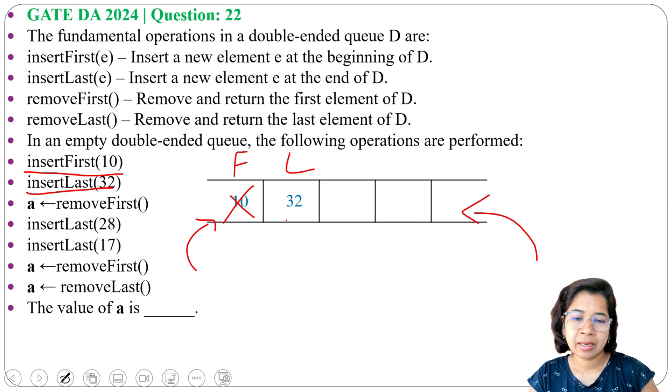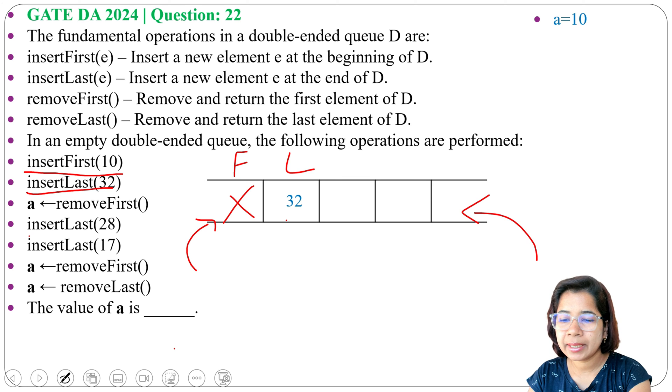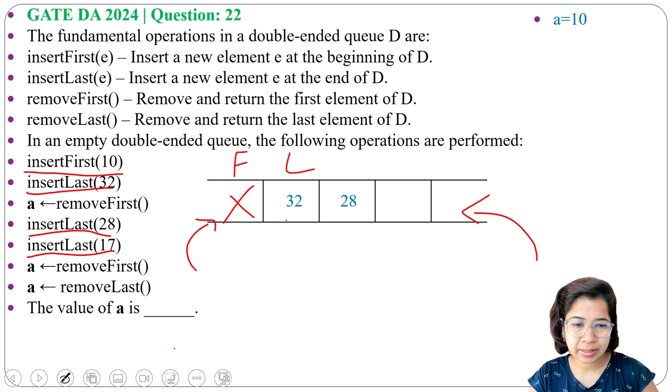Next insertLast(28), we will insert 28 after 32. Next insertLast(17), so we will insert 17 at last. Next a ← removeFirst.